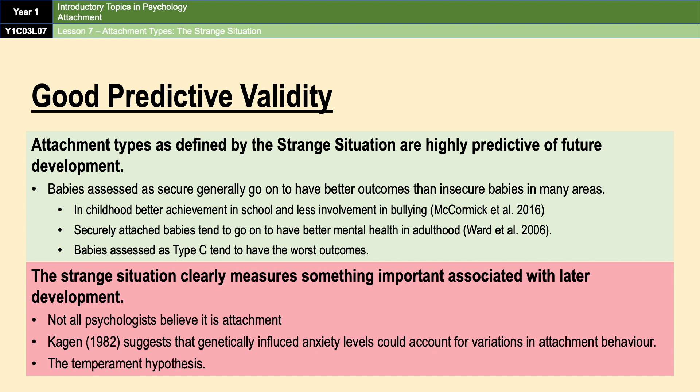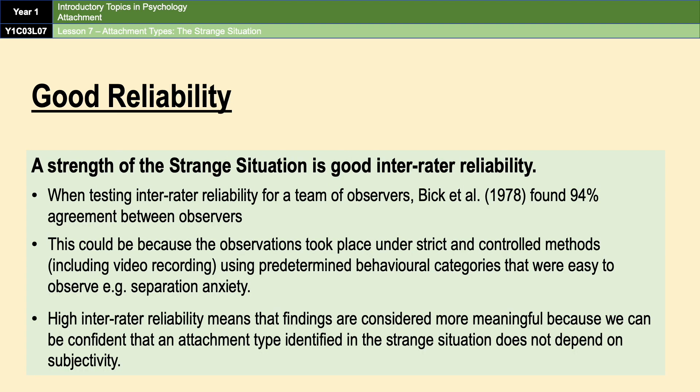A further strength of the strange situation is that it has good inter-rater reliability. When testing inter-rater reliability, Bick et al. found 94% agreement between observers. The high reliability could be because the observations took place under strict controlled conditions using predetermined behavior categories that involve large, easy-to-observe movements — for example, anxious babies cry and crawl away from strangers, which everybody can see. This means findings are considered more meaningful because we can be confident that an attachment type identified doesn't depend on subjective opinion.